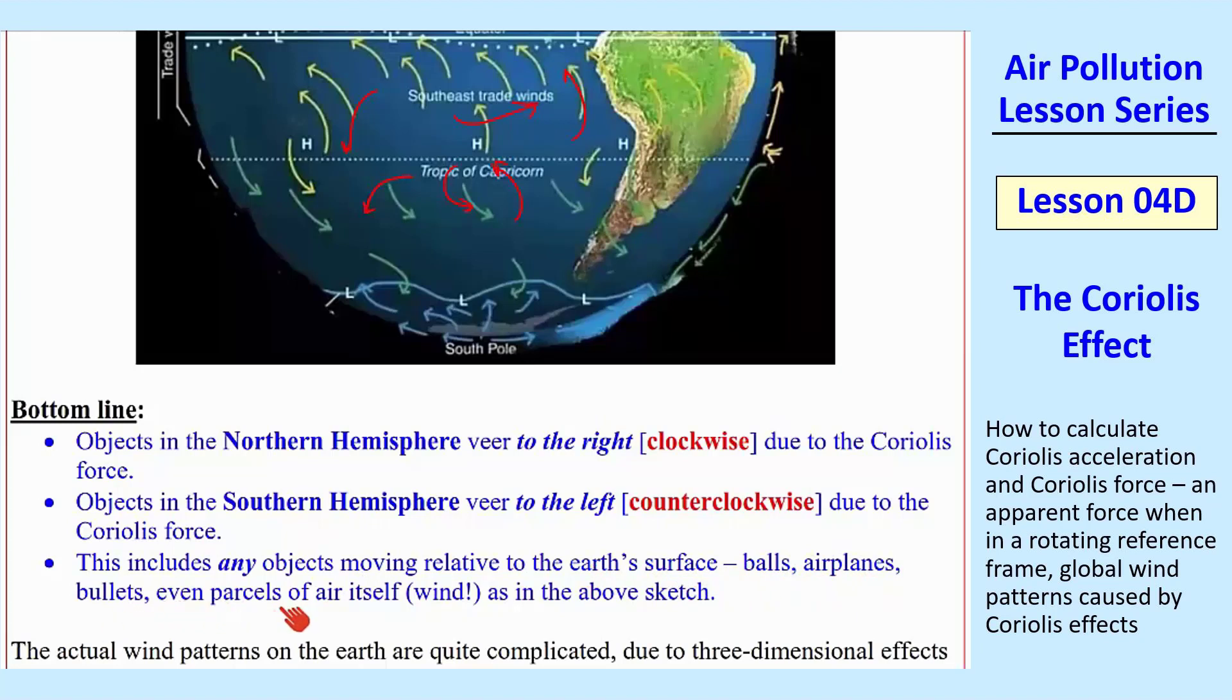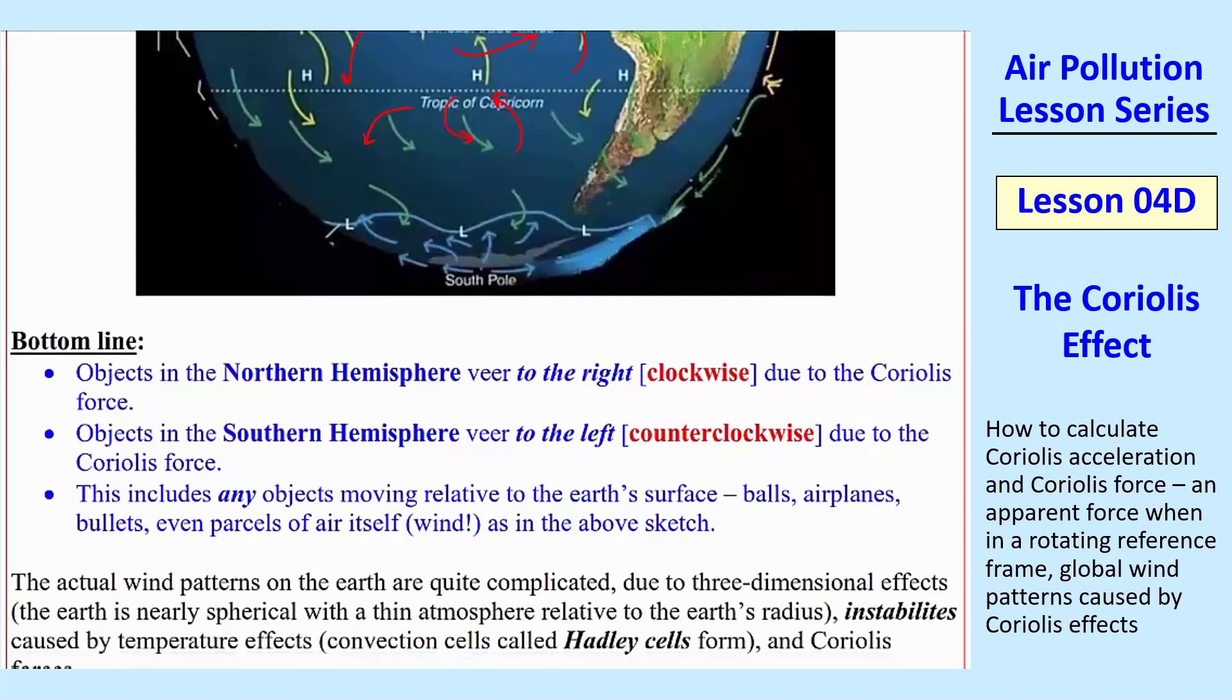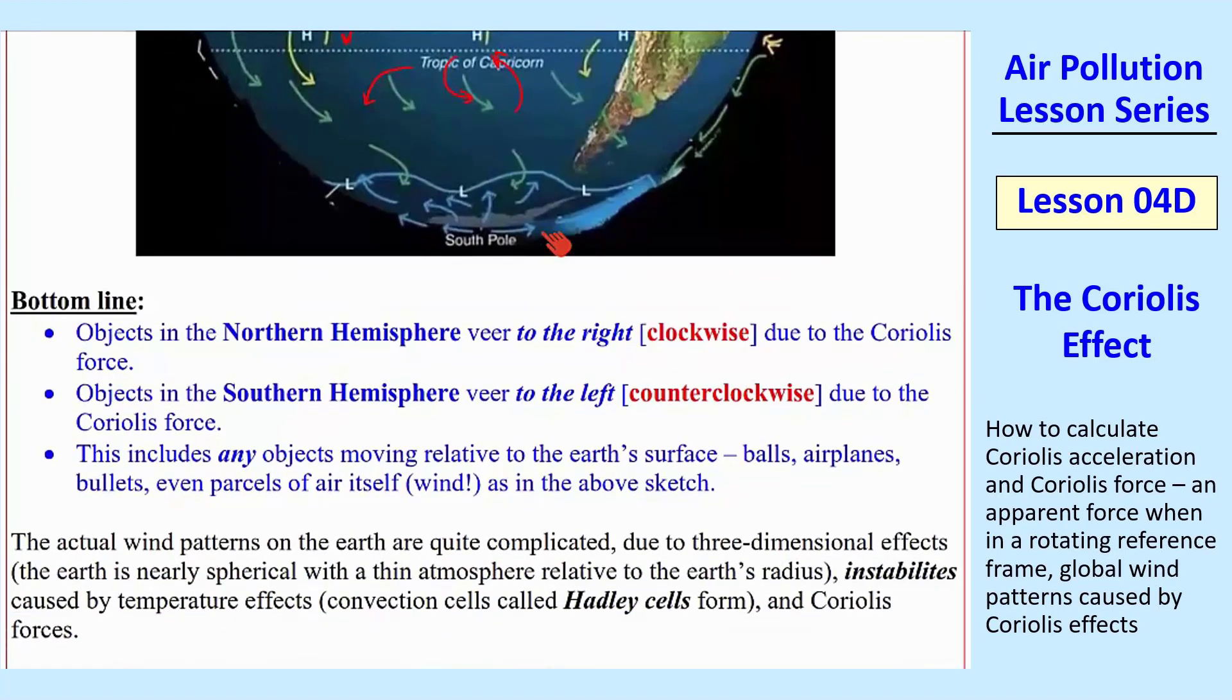they veer to the left counterclockwise. And this includes any objects moving relative to the Earth, surface, balls, airplanes, bullets, even parcels of air itself or wind, as in the above sketch. And that's why we're dealing with this, because this affects how plumes move around and how air pollution moves around on the Earth.